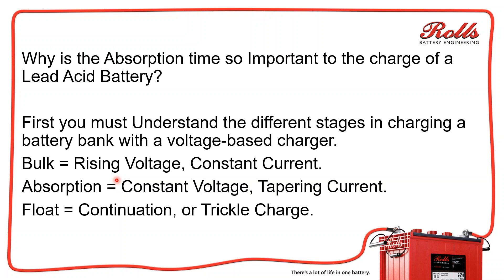Float is a continuation or a trickle charge. When your batteries go to float, they should be 98 to 99 to 100 percent full. The float charge is just replacing the energy that's lost over just the losses of the battery. If you're an off-grid system, you're typically not going to go to float unless you have lots of panels or you're running a generator.